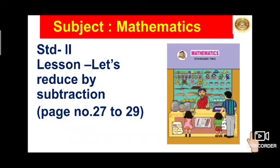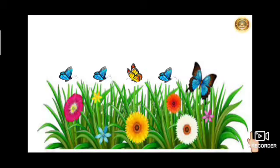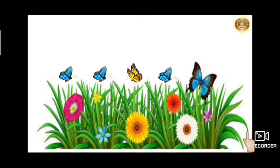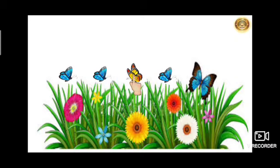So children, take out page number 27 from your Mathematics textbook. Tell me children, what you all can see in this picture? Yes, beautiful butterflies. Then tell me children, how many butterflies can you see in this picture? Let's count: 1, 2, 3, 4, 5. There are 5 butterflies.